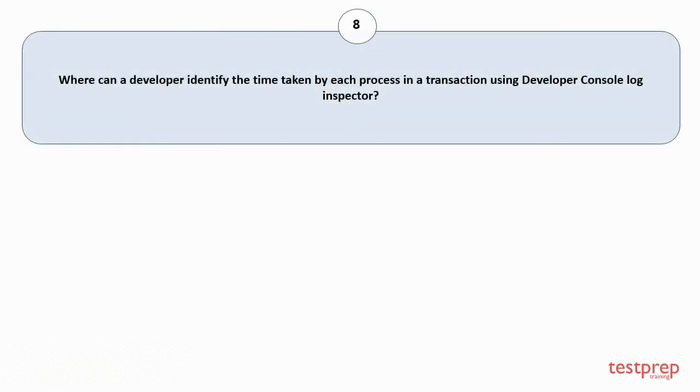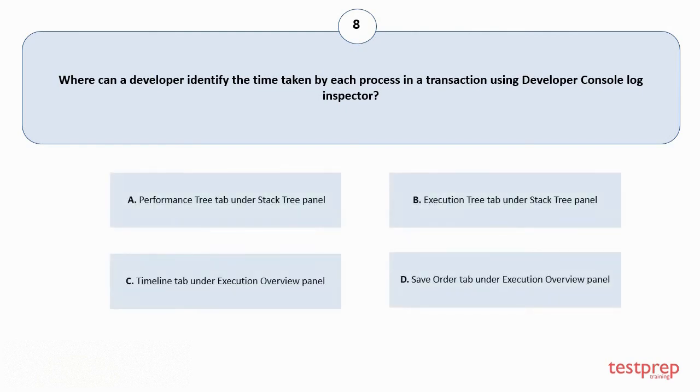Question number 8: Where can a developer identify the time taken by each process in a transaction using Developer Console log inspector? Your options are: A. Performance tree tab under stack tree panel. B. Execution tree tab under stack tree panel. C. Timeline tab under execution overview panel. D. Save order tab under execution overview panel. The correct answer is option C.